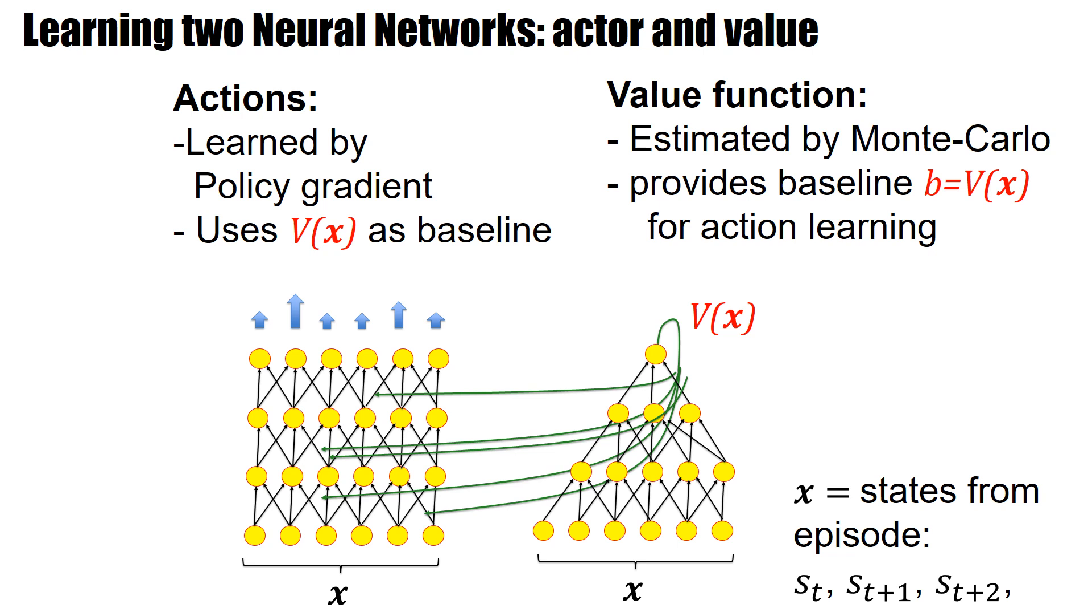The states can be taken as inputs x for the actor network, and the actor network learns the actions. It does it by policy gradient and uses a value V(x) as the baseline. The bias is the value, and the value is learned in a second network that also uses the same states as inputs. This second network has as the output this value V(x) for this input, and this provides the baseline for action learning.